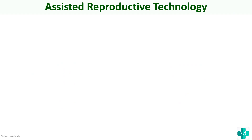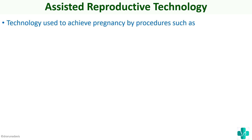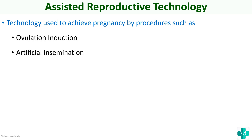So what is assisted reproductive technology? It is basically the technology used to achieve pregnancy by different procedures such as ovulation induction, artificial insemination, as well as in vitro fertilization. From a first-year MBBS level, you need to know just the basics about assisted reproductive technology.